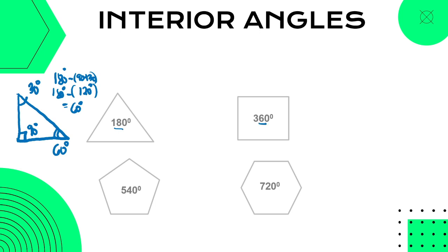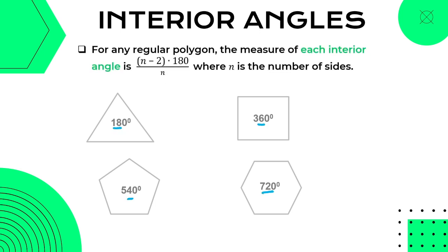Now let's focus on regular polygons — that means all sides are equal and all angles are equal. For any regular polygon, the measure of each interior angle is equal to (n − 2) × 180 divided by n, where n is the number of sides. Notice that (n − 2) × 180 is yung ginamit natin kanina, which is the sum of all interior angles. Dahil ang hinahanap natin ngayon is ang measure ng bawat interior angle, we need to divide this sum equally based on its number of interior angles.